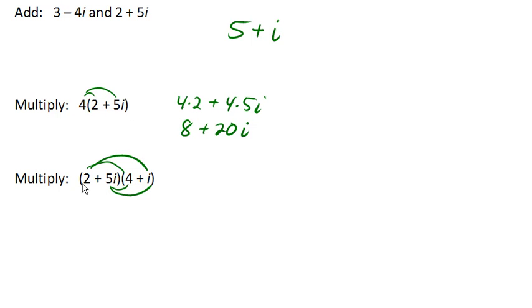Then we're going to multiply the outer terms. So 2 times i is 2i. Then we're going to multiply the inner terms. So 5i times 4 is 20i. And then we're going to multiply the last terms. And 5i times i is 5i squared.